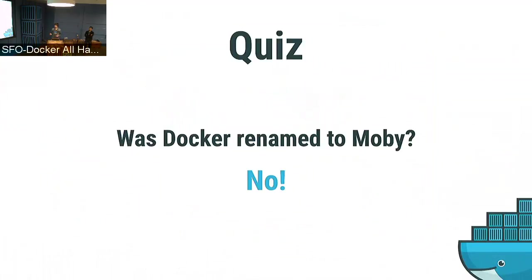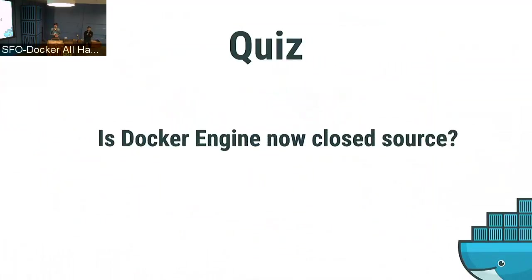What happened is that the Docker repository, where both the project and the product were hosted, got renamed to Moby so we can start componentizing the Docker engine. Another question: does that mean the Docker engine is now closed source and Moby is the open source one? No. Docker engine is not closed source — it remains open source. The Docker CLI has been split out to its own repository at github.com/docker/cli, and it's still open source. On the Moby side, all of it is open source, so you just continue sending pull requests there.